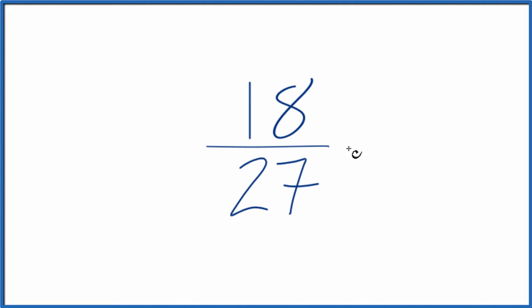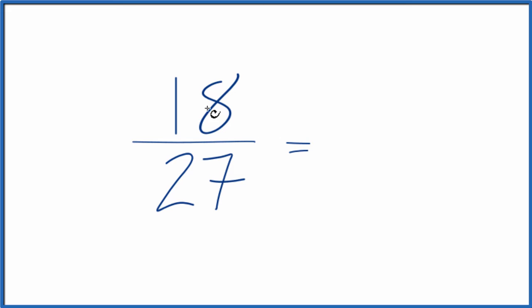If you know your multiplication tables, you might know that 9 will go into 18 and 27 evenly. So if you divide 18 by 9, you get 2. If you divide 27 by 9, you get 3. And we'd have simplified the fraction 18/27 down to 2/3.